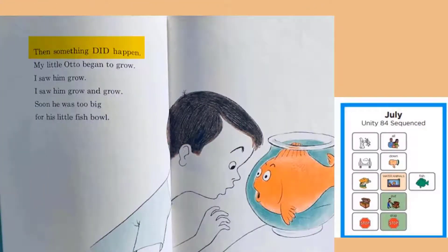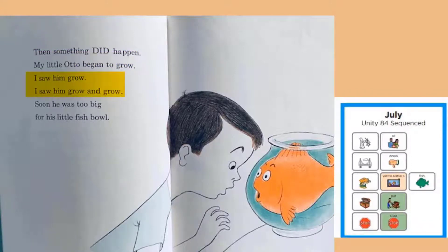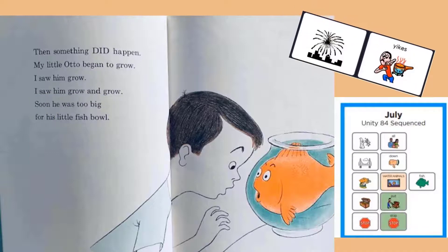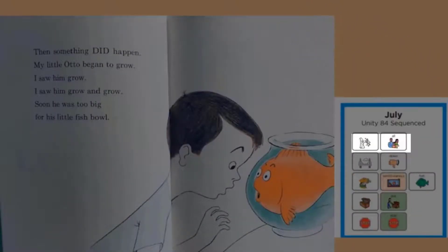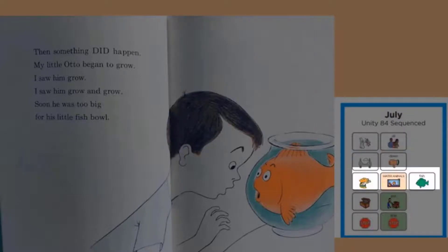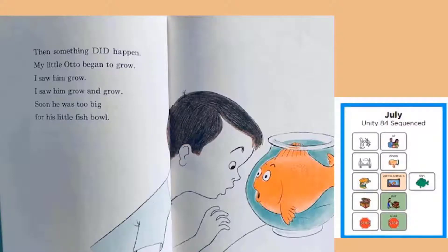Then something did happen. My little Otto began to grow. I saw him grow and grow. Soon he was too big for his little fish bowl. He put all the food into the fish bowl and now his fish is growing bigger. What will he do?